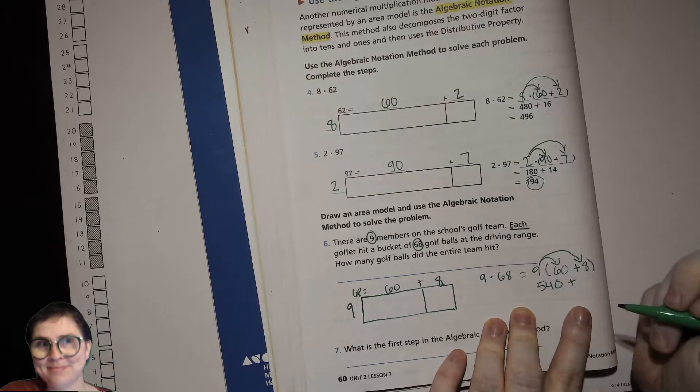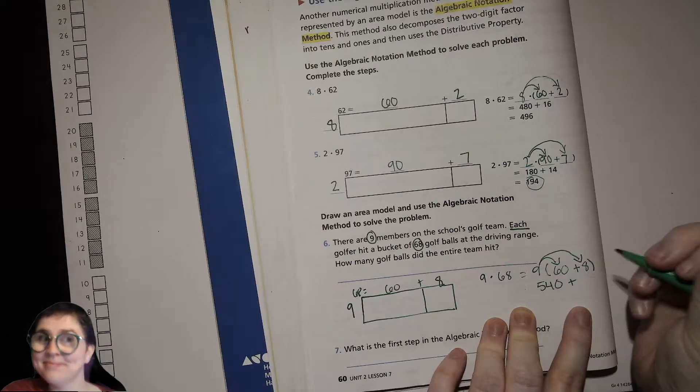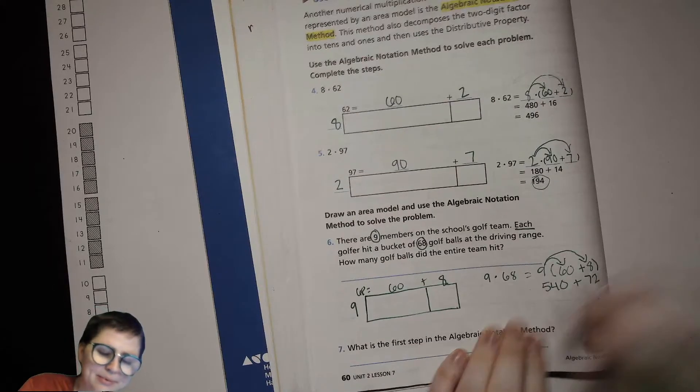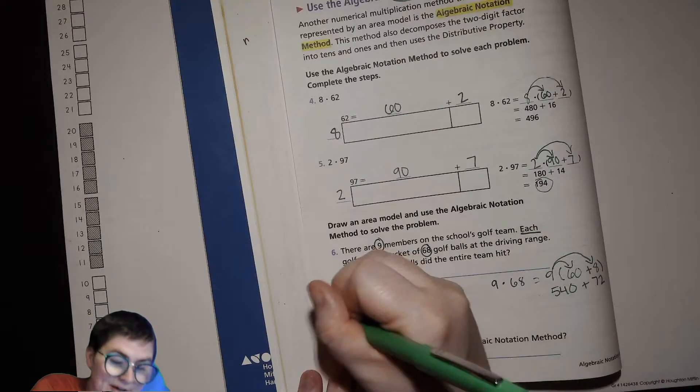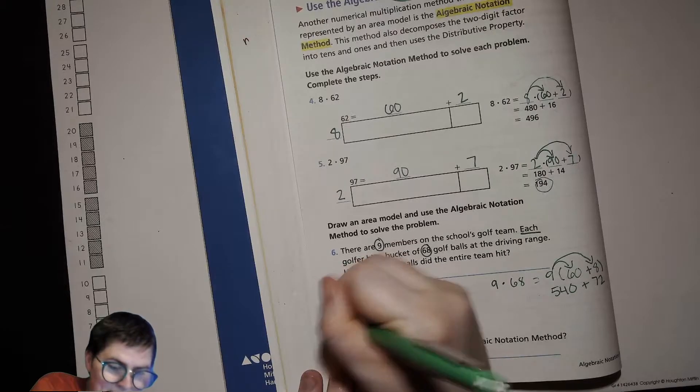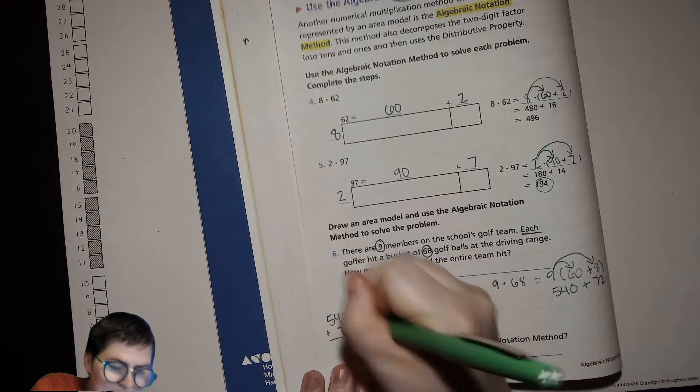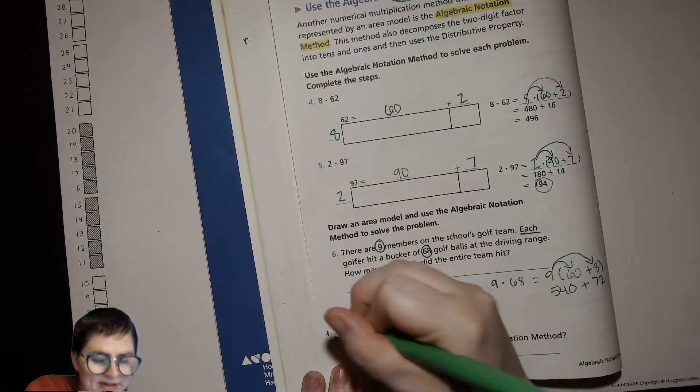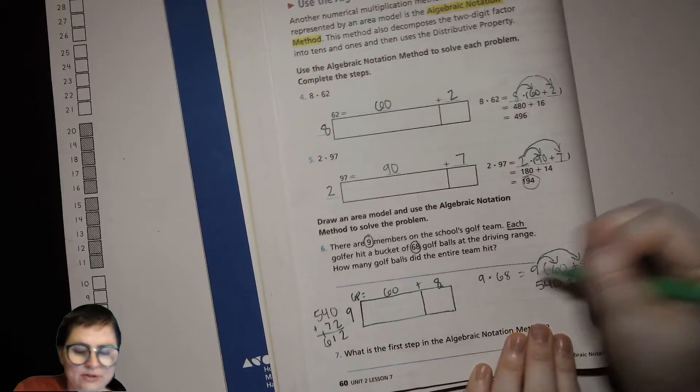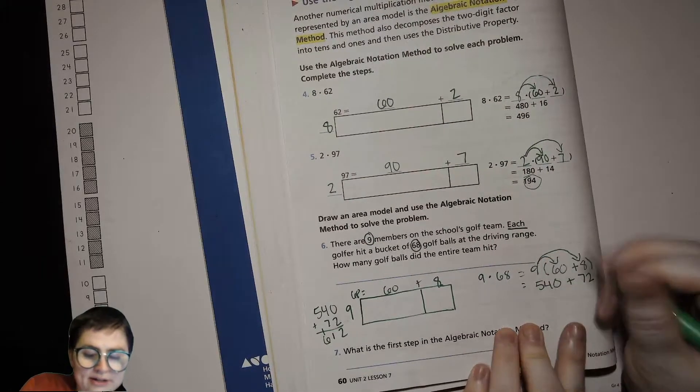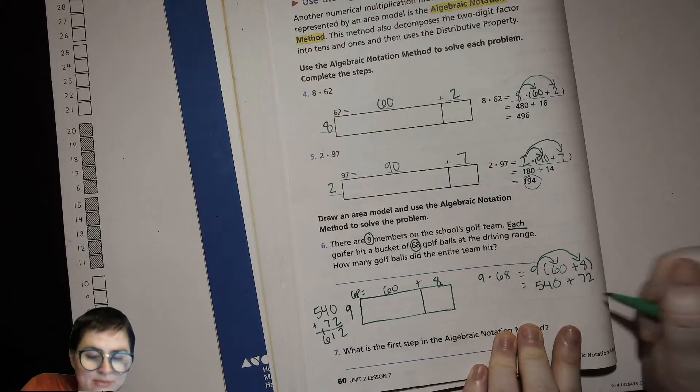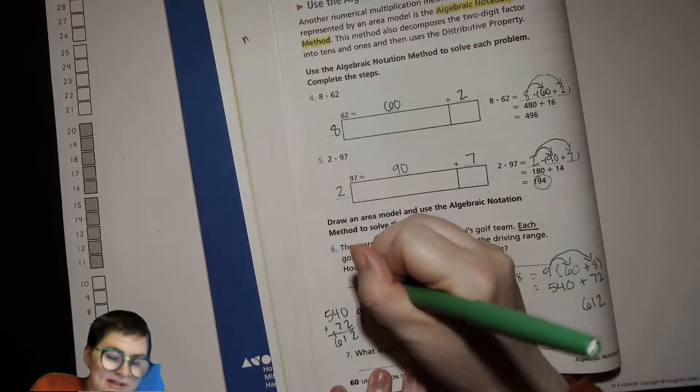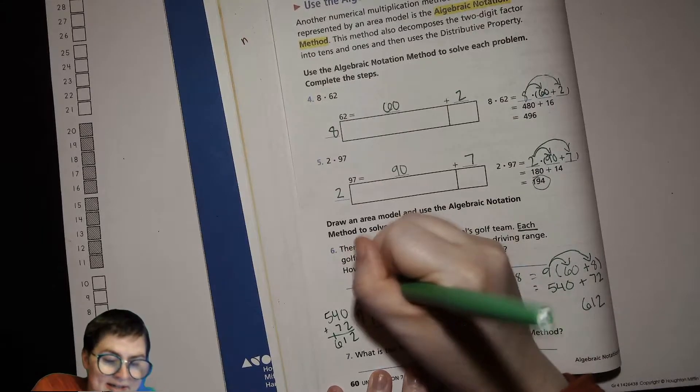We'll do our 9 times 60, so what's 9 times 6? 54, so 9 times 60 is 54 tens, 540. And then 9 times 8 is 72. Now you'll add those up. 540 plus 72: 0 plus 2 is 2, 4 plus 7 is 11, and 500 plus 100 is 600. So our full product combining our two partial products is 612, so we did 9 times 68.